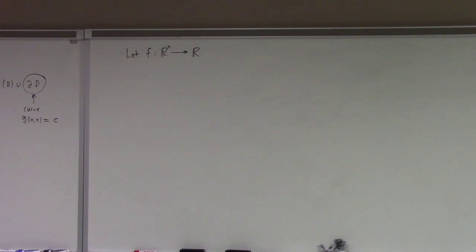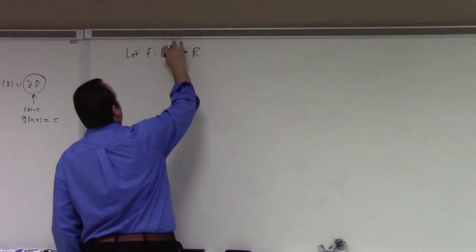So we take the codomain to be the reals. I suppose if you had a vector valued function, you could look at maximizing the norm of the function or something, but this is what we look at.